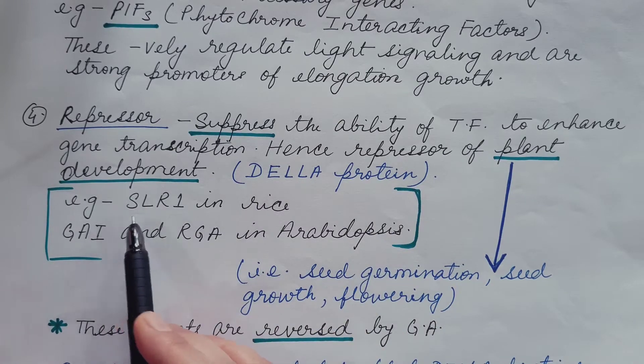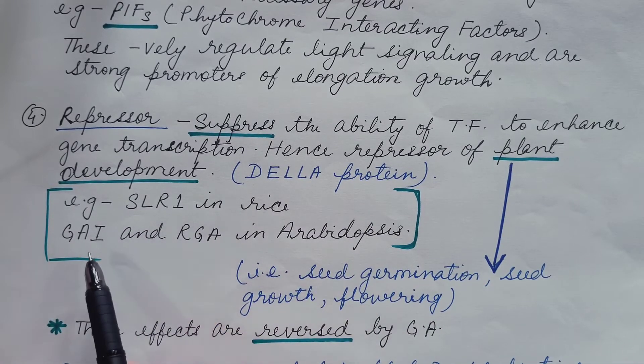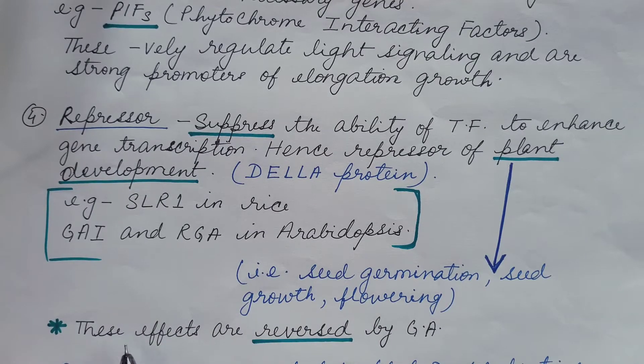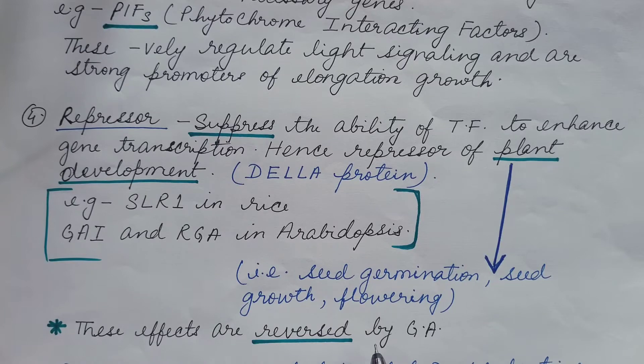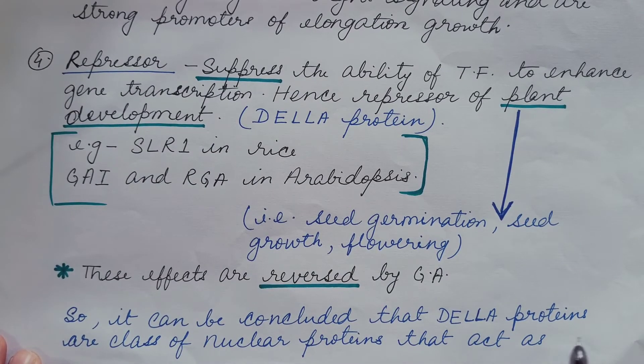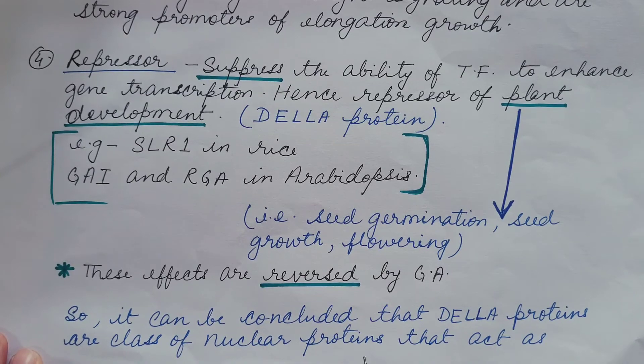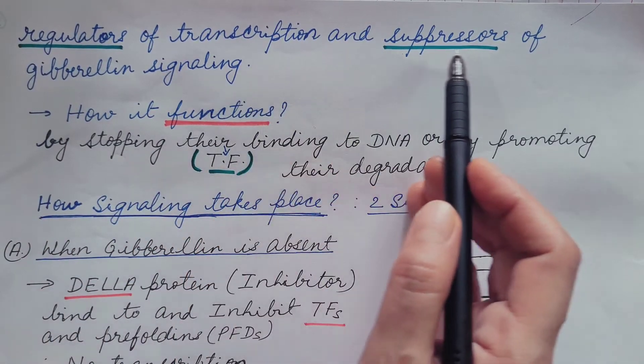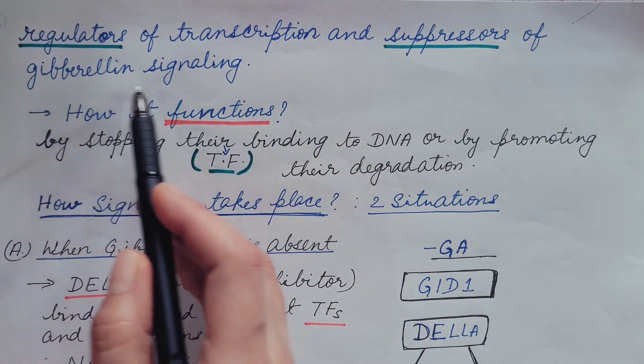In rice, it is SLR1 and in arabidopsis, it is GAI and RGA. And the effect of repressors are reversed by gibberellin. So we can conclude that DELLA proteins are class of nuclear proteins that act as regulators of transcription and suppressors of gibberellin signaling.